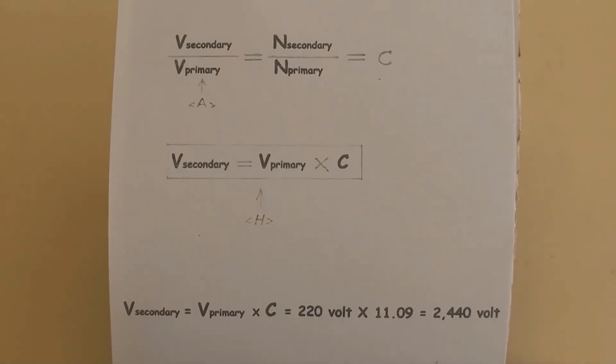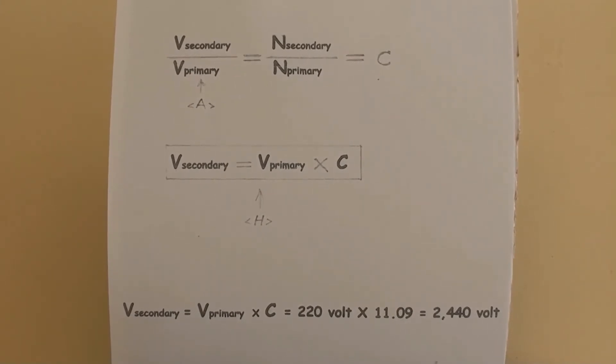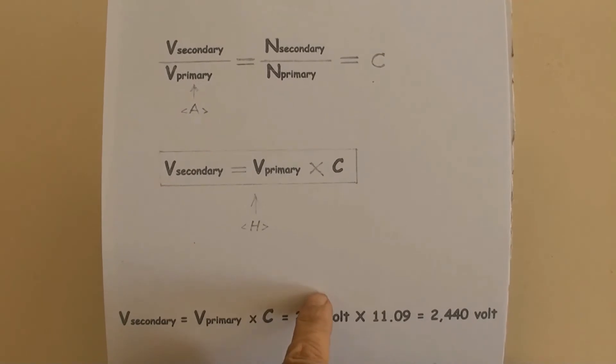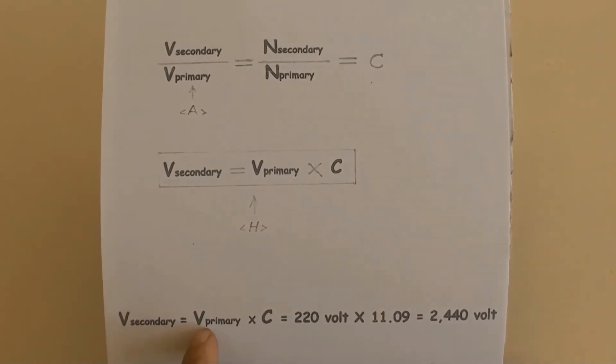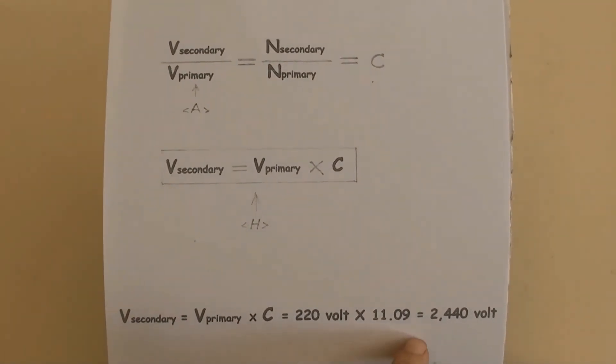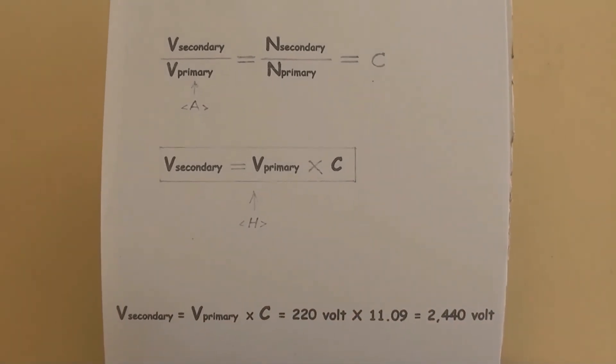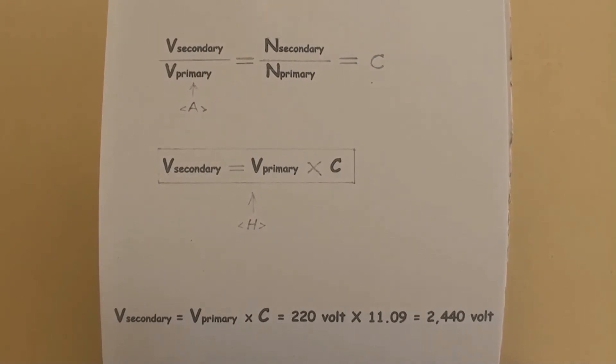To consider another situation, if load voltage was 220 volts instead of 244 volts, high voltage would be V secondary equals V primary times C equals 220 volts times 11.09 equals 2440 volts.